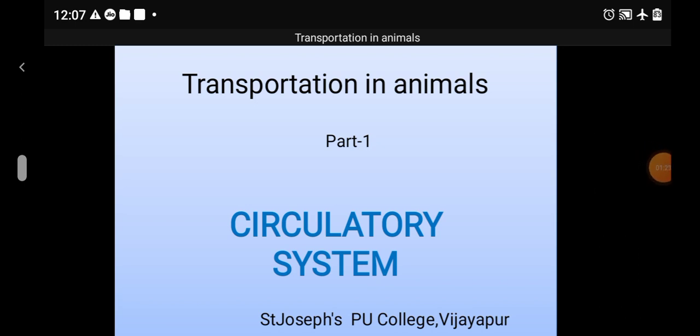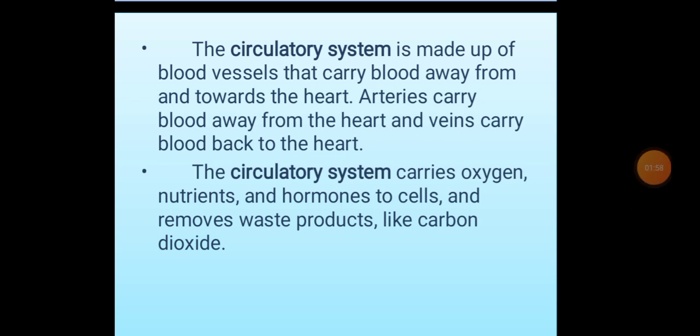We are discussing especially transportation in human beings. In animals, transportation is mainly through the circulatory system. This system helps in the transport of nutrients such as glucose, amino acids, and fats to different parts of the body. Every cell receives absorbed nutrients through the circulating fluid tissue called blood. The circulatory system is made up of blood vessels that carry blood away from and towards the heart.